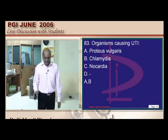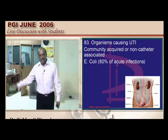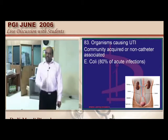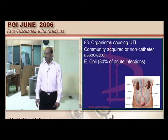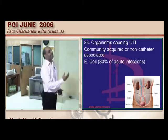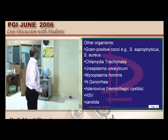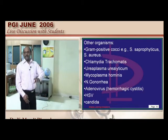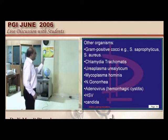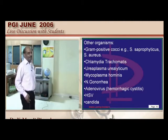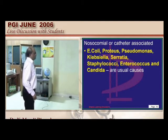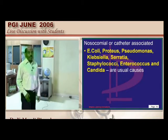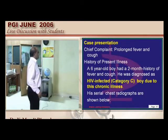UTI in the ICU: catheterization history is a single key factor determining the type of organisms. Non-catheter-associated (community-acquired) UTI is most commonly caused by E. coli, with Proteus and Klebsiella occasionally. In catheter-associated UTI, E. coli is still common but enterococci, Candida, Staphylococci, and Serratia also become part of the picture.